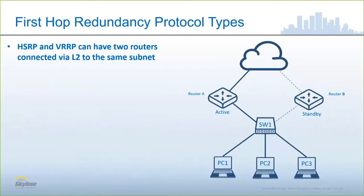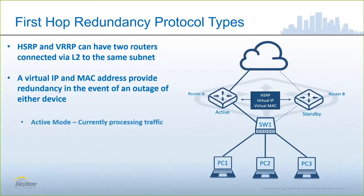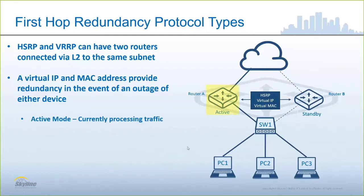They have to know each other is there. The way we do this is we use a virtual IP address and a virtual MAC address to provide redundancy in the event of an outage of either device. One of the keys we have to understand about Virtual Router Redundancy Protocol is that there is not just a redundant IP address, but very importantly, a redundant MAC address. When this comes up with VRRP or HSRP, typically one router will assume the active mode and it will process all traffic coming from outside of the subnet going into the subnet.